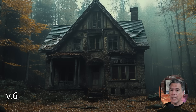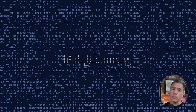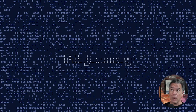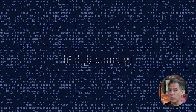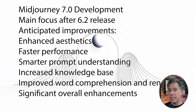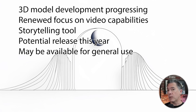Overall, it is a very slight quality boost, but to be fair, it is a 0.1 update. We're not looking for a massive jump like we see between version numbers like 5 to 6 and 6 to eventually 7. Version 6.2 is not far behind — apparently we'll be getting that within the month. After that, that's the end of version 6 updates and we'll move on to version 7. The key features of version 7 are said to include enhanced aesthetics, faster performance, smarter prompt understanding, increased knowledge base, improved word comprehension and rendering, and significant overall enhancements. Still on the roadmap are 3D and video, and the Storyteller tool will potentially release this year.